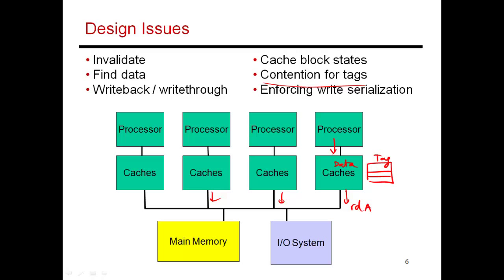We've introduced three different states for every cache block: modified, shared, and invalid — which is why this is also called the MSI protocol. There are two conditions you have to enforce to confirm a valid, correctly working cache coherence protocol: write propagation and write serialization. Let's see if these two conditions are fulfilled by the protocol I just described.